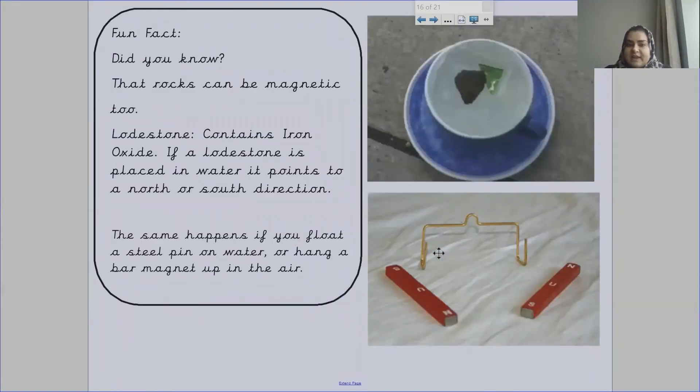I've got a fun fact for you here. Did you know that rocks can be magnetic too? There's a rock called a lodestone which contains iron oxide. If a lodestone is placed in water, it points to a north or south direction. The same happens if you float a steel pin on water or hang a bar magnet up in the air.